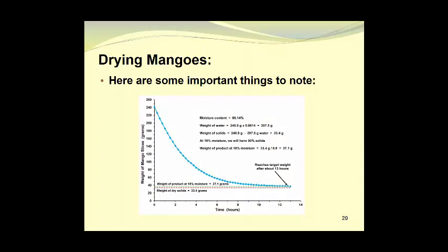Here are some of the important things to note. The moisture content of the mangoes going into the drying run was 86.14% on a wet basis. The weight of the mangoes themselves was 240.9 grams, which allowed us to calculate the weight of the water. That was 240.9 grams times 86.14% moisture as a decimal fraction, and that works out to 207.5 grams of water. The weight of solids was equal to the initial weight of the sample, 240.9 grams minus the 207.5 grams of water, which gave us 33.4 grams of solids.